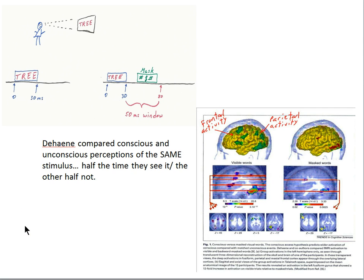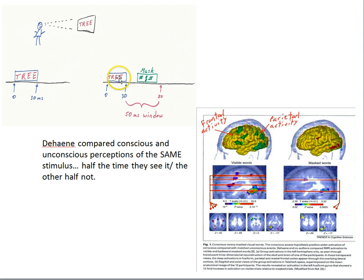In part two, we'll continue with Dehaene's research into the brain correlates of consciousness. He used a masking procedure, where you present a word and then a mask follows within a critical time window. You can arrange the mask and its precise timing so that half the time the subject consciously sees the word 'tree' and half the time not. In both conditions, the subject is seeing the same visual stimulus — the difference is that sometimes they're conscious of the word, sometimes not. That is an ideal experimental setup to look for patterns of brain activity that are different for the conscious perception versus the masked condition.